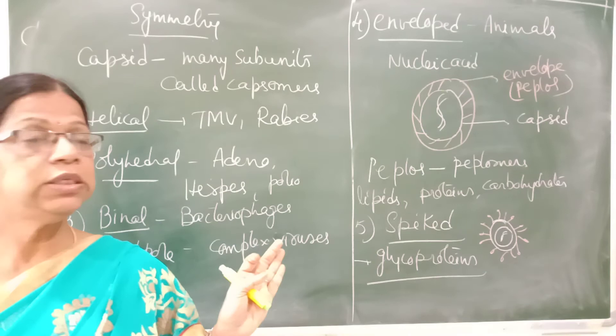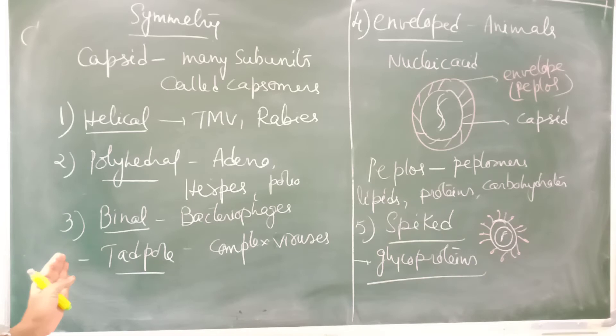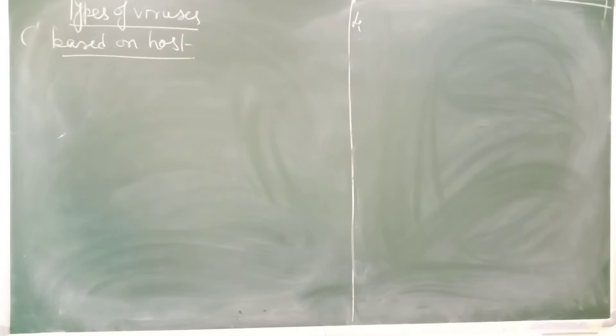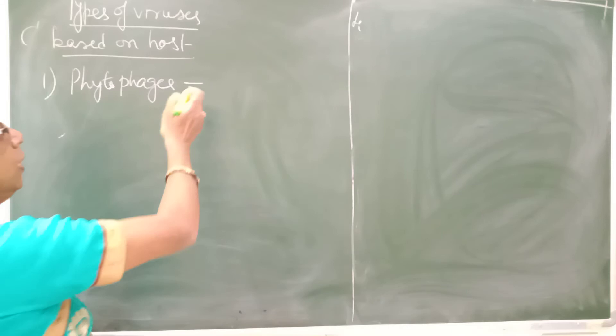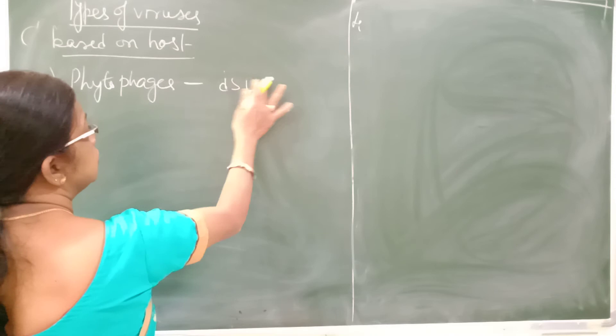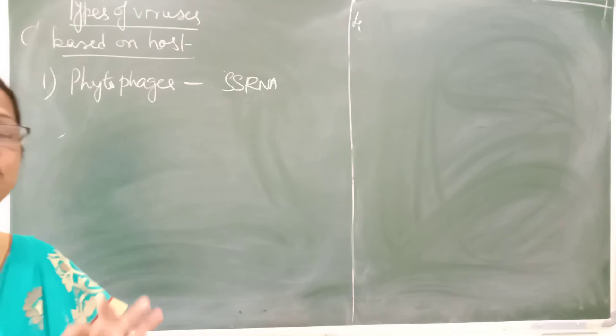Now let us see the different types of viruses based on their host. The first type is phytophages, which are viruses that attack plants. In phytophages, the genetic material is normally single-stranded RNA.